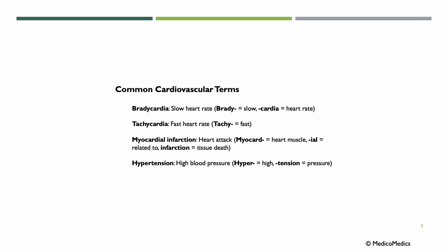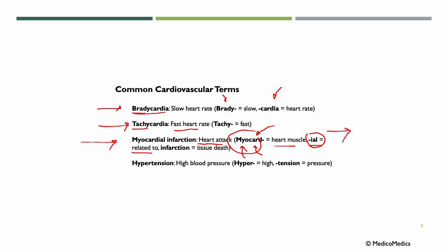Now let's look at some common cardiovascular terms. BRADYCARDIA means slow heart rate — BRADY means slow, CARDIA means heart. TACHYCARDIA means fast heart rate — TACHY means fast. A new one is MYOCARDIAL INFARCTION, meaning heart attack. The myocardium is the heart muscle: MYO means muscle, and CARDIA means heart. The suffix -IAL means related to, so MYOCARDIAL relates to the heart muscle. INFARCTION means tissue death.